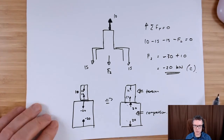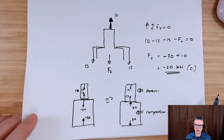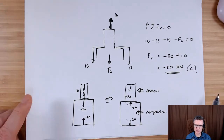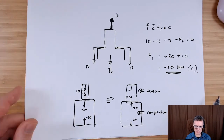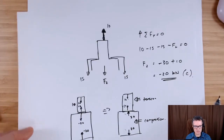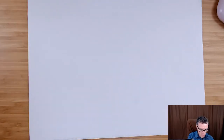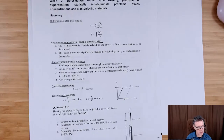So the top section is in tension at 10 kilonewtons, and the bottom one is in compression at 20 kilonewtons. And that was a lot of hoo-ha for not much work! Next we need to determine the amount of stress at the midpoint of each section.